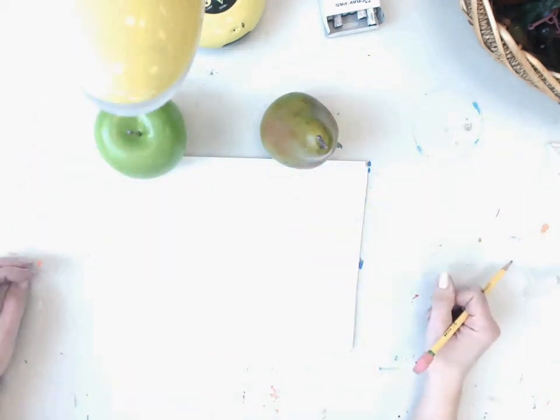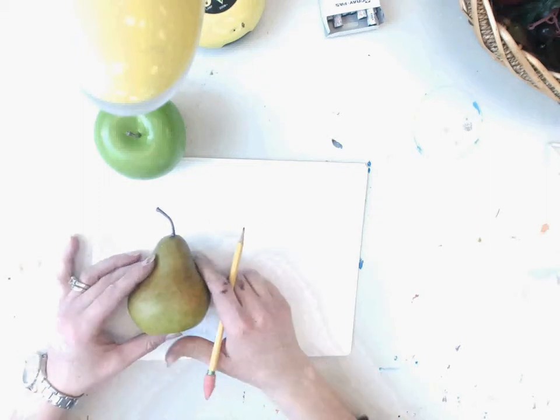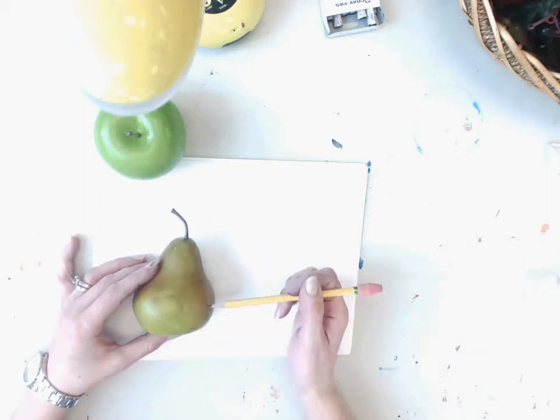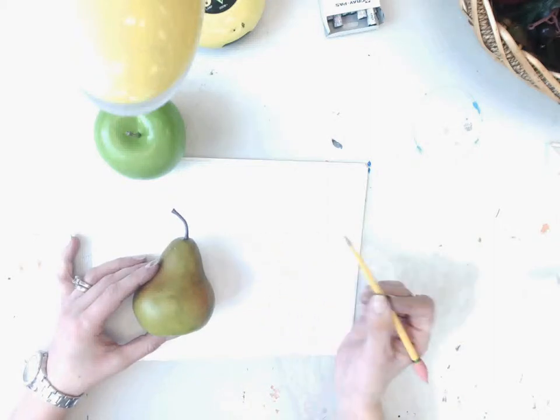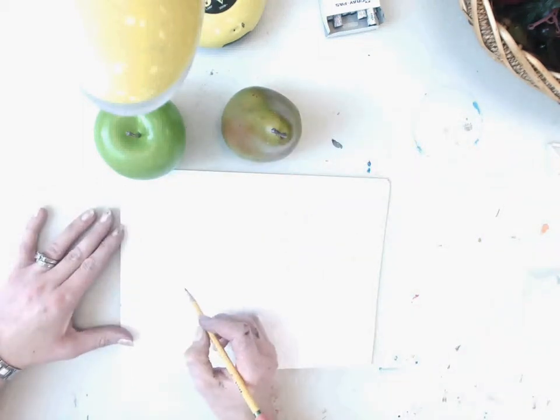The first thing we're going to do is draw a pear. A pear is essentially two circles with a curve to join them. You're going to start on your paper by making a large circle.